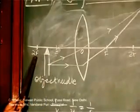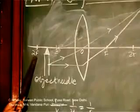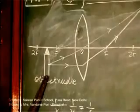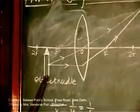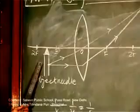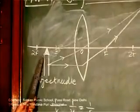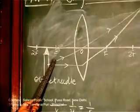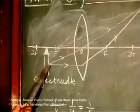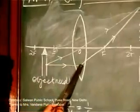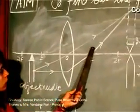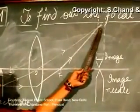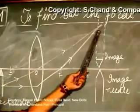If F is known, 2F is automatically known. We will again be using two needles: the first one acts as the object and the second is used to locate the position of the image. If I keep the object needle between 2F and F, then according to the rules, I should be getting its image beyond 2F after convergence. These two rays, after convergence, meet at a point — meaning I will get the image of the object needle at that position.